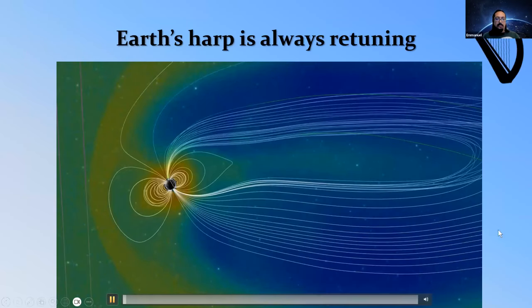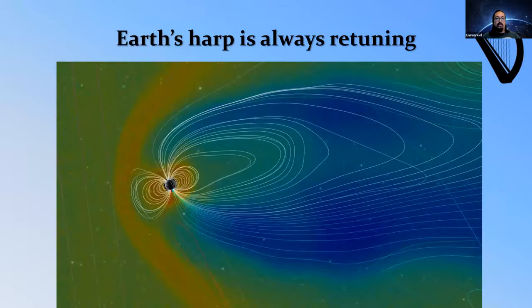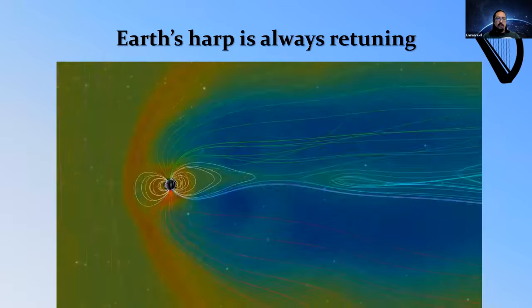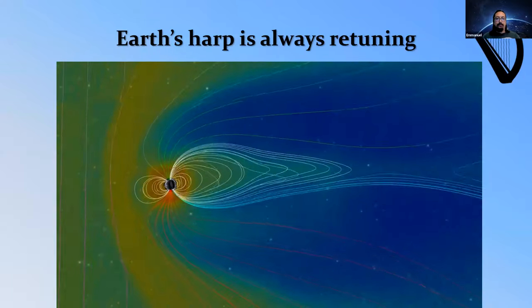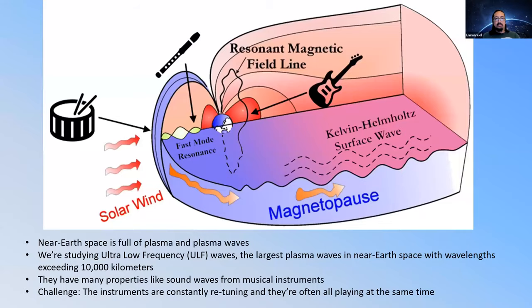Here's a cool simulation based on spacecraft data showing the harp strings as they're changing. You can see the sun, and the solar wind just impacted the Earth — all that yellow and orange material is buffeting Earth's magnetic field and the harp is responding. Here's another diagram showing the impact on the outer edge of the magnetosphere or bubble. Those vibrations can transfer inward and cause the magnetic field lines to vibrate as well. The surface of the magnetosphere can vibrate like a drum.